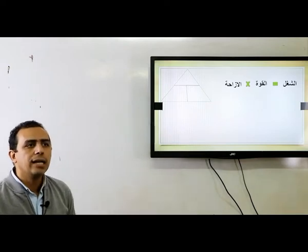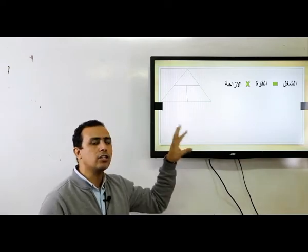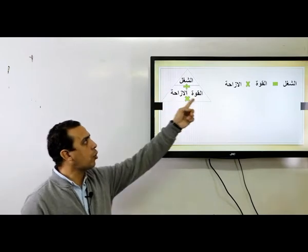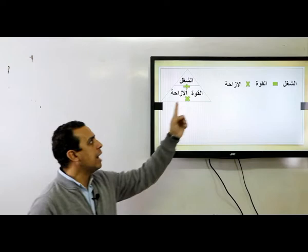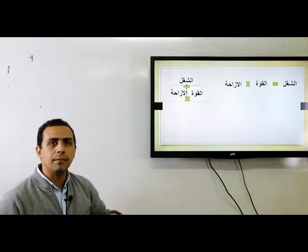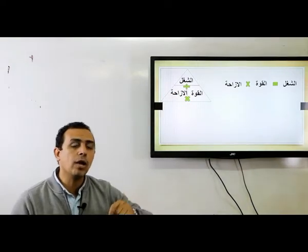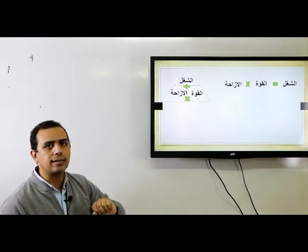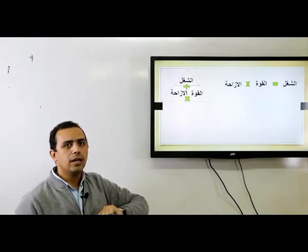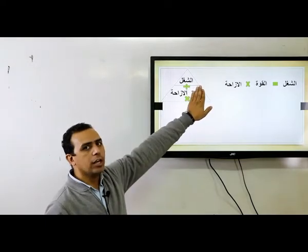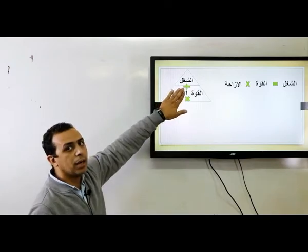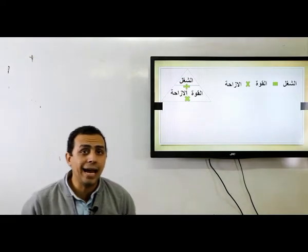أي قانون نعمله مسلس لتسهيل استخراج المجاهيل. المسلس بيقول: الشغل فوق، والقوة والإزاحة جنب بعض. لو الاتنين جنب بعض يبقى اضرب، ولو الاتنين فوق بعض يبقى اقسم. لو عايز الشغل: الشغل = قوة × إزاحة. لو عايز القوة: القوة = الشغل ÷ الإزاحة. لو عايز الإزاحة: الإزاحة = الشغل ÷ القوة.